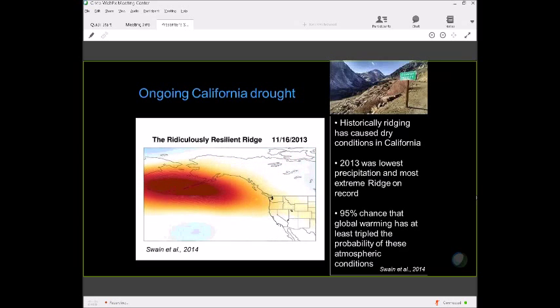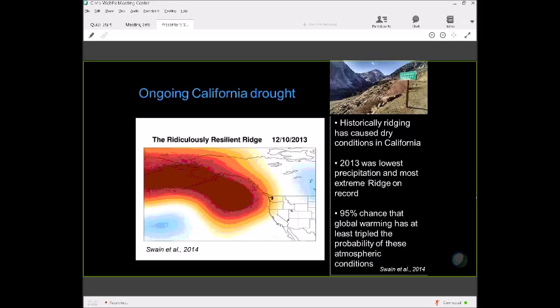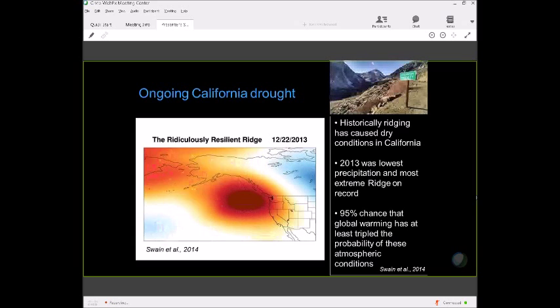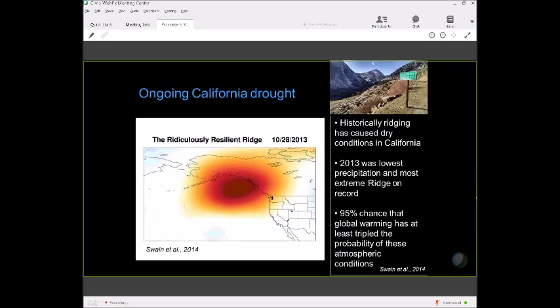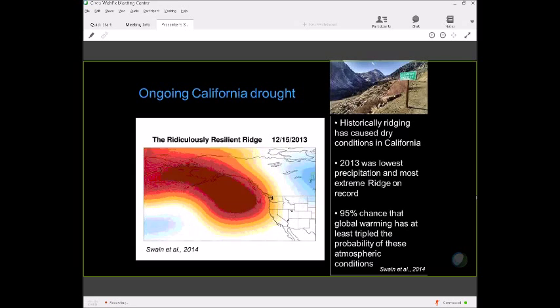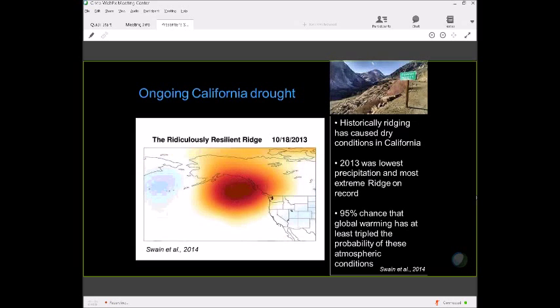When we do the uncertainty analysis on the return period, it's a really rare occurrence in the current climate, anywhere from century scale to two millennia. That's the 5% to 95% range on the calculated return period. It's a really rare event in the current climate. Clearly bad luck to get this kind of persistent ridging. And when we try to quantify the probability of this atmospheric configuration in the current climate relative to the climate without global warming, while it's rare in the current climate, it's less rare than it would have been without any global warming at all. Again, plenty of bad luck involved in the lack of precipitation, but some evidence that global warming has made that bad luck more likely.